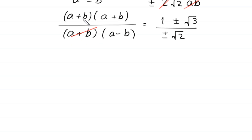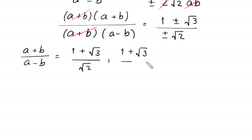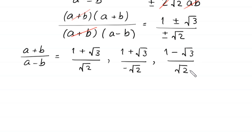This gives four combinations: the first is (1 plus root 3) divided by positive root 2; the second is (1 plus root 3) divided by negative root 2; the third is (1 minus root 3) divided by positive root 2; and the fourth is (1 minus root 3) divided by negative root 2. Now we rationalize the denominator of each expression.